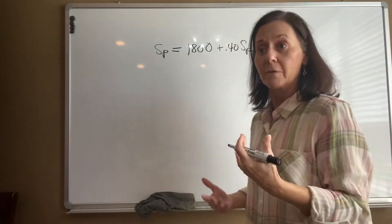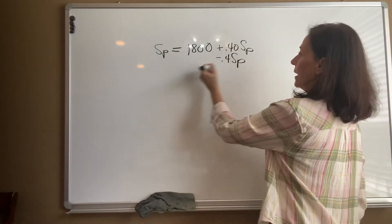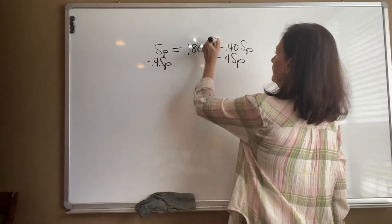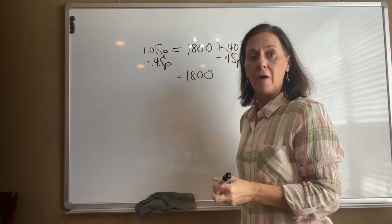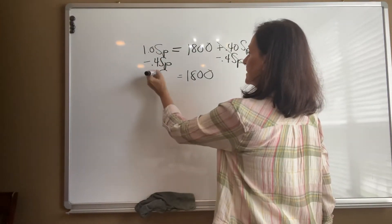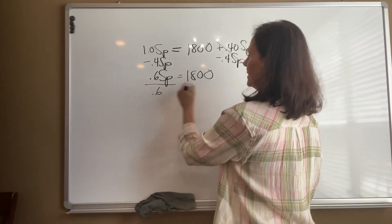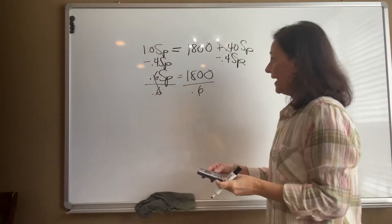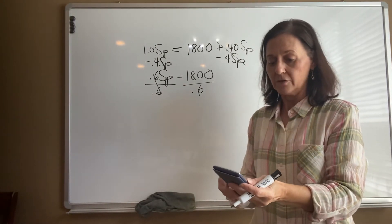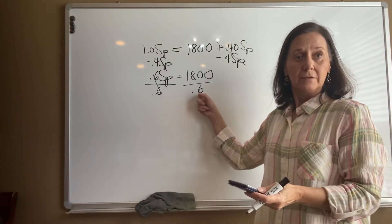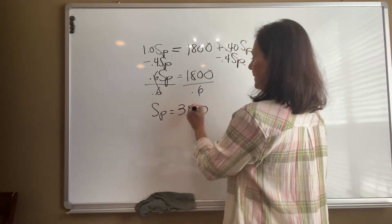So what we would do is we would move our like terms to the same side. So we'll subtract 0.4 selling price on both sides and we end up with $1,800. That's really 1.0 minus 0.4, which would be 0.6 times the selling price. Then we divide both sides by 0.6. The selling price—if they're losing money, the selling price isn't more than 1,800, right? And when you divide a number by a decimal less than one, it's always going to be greater. So the selling price is $3,000.